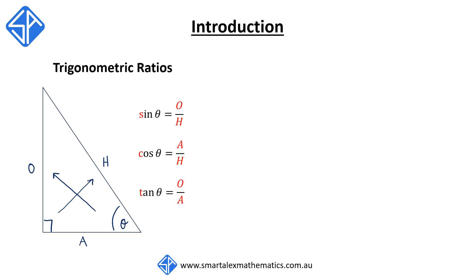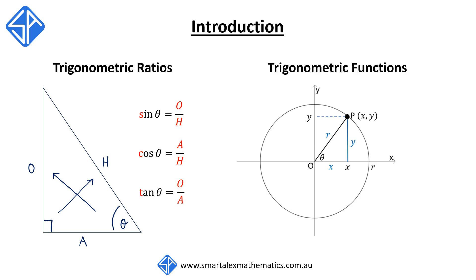One of the limitations of defining sine, cos, and tan this way using right angle triangles was that we could only work with acute angled right triangles — we couldn't work with anything beyond that, for example obtuse angled triangles. Therefore, to overcome this, we're now going to define sine, cos, and tan using a circle. This is the concept of trigonometric functions, which is what we're going to be exploring in this video.